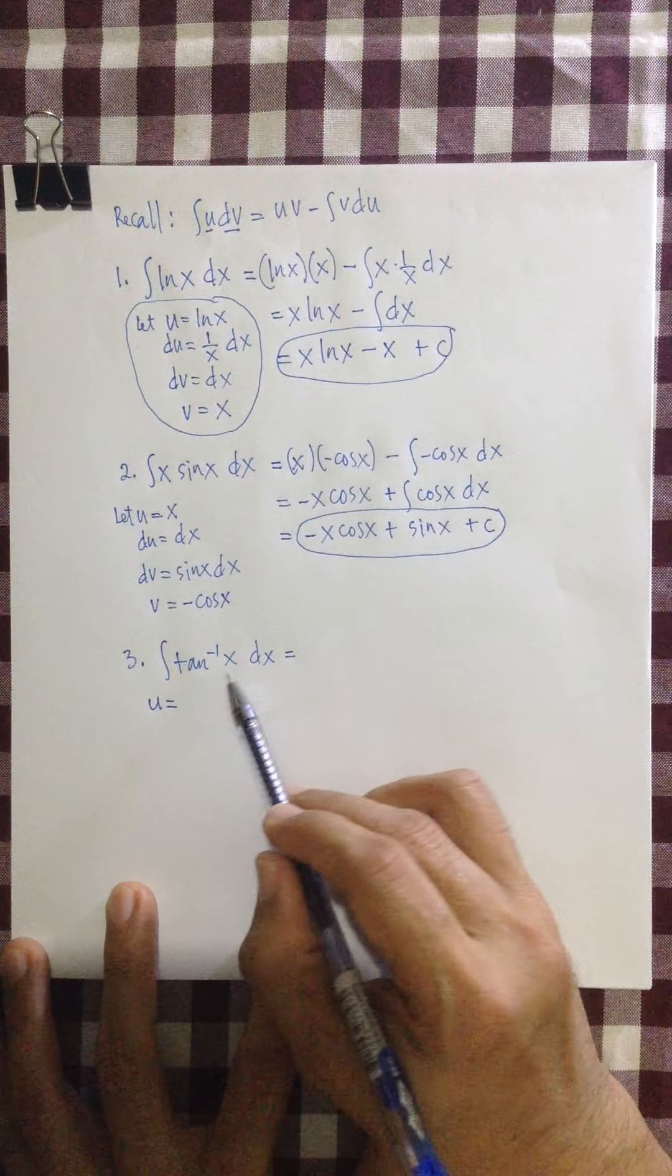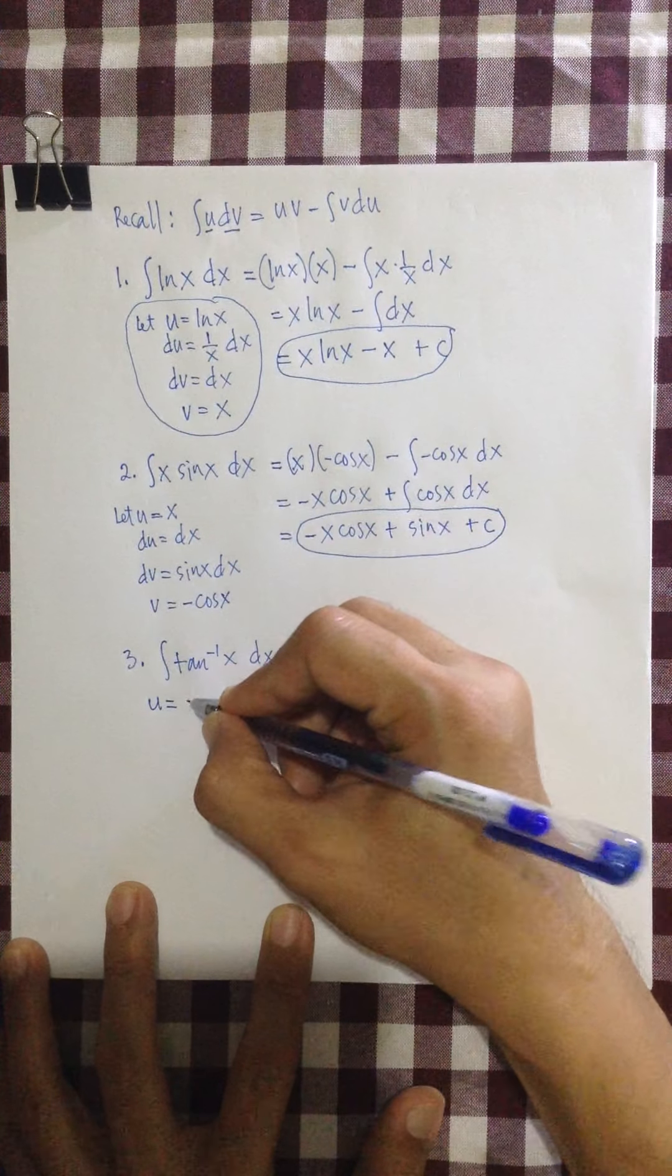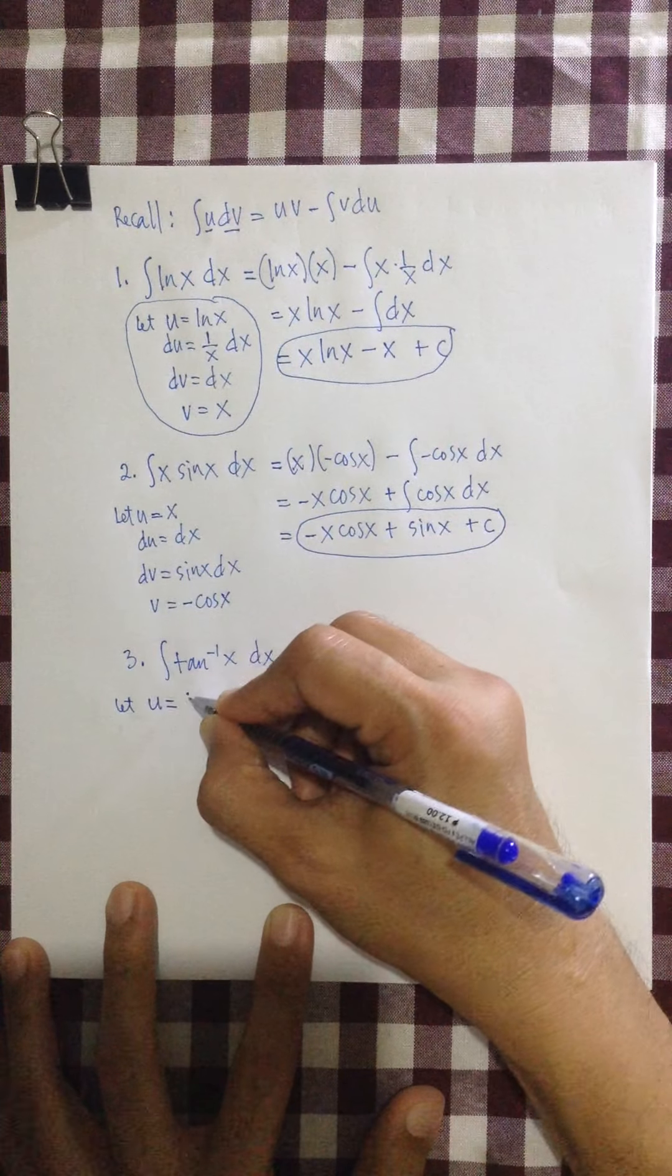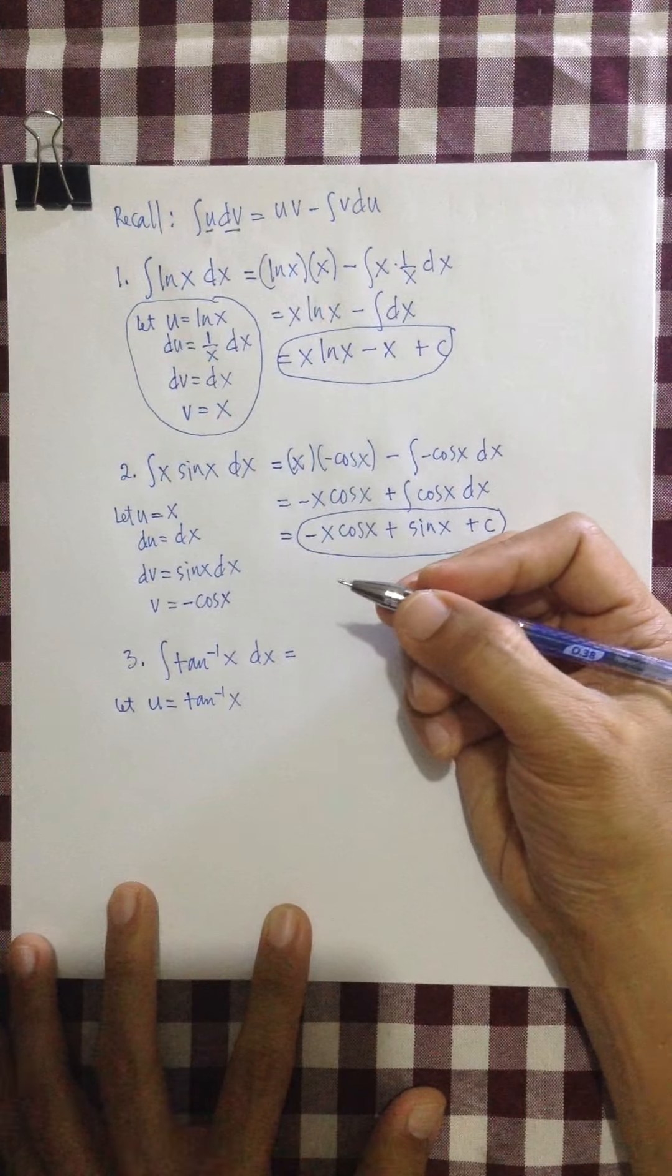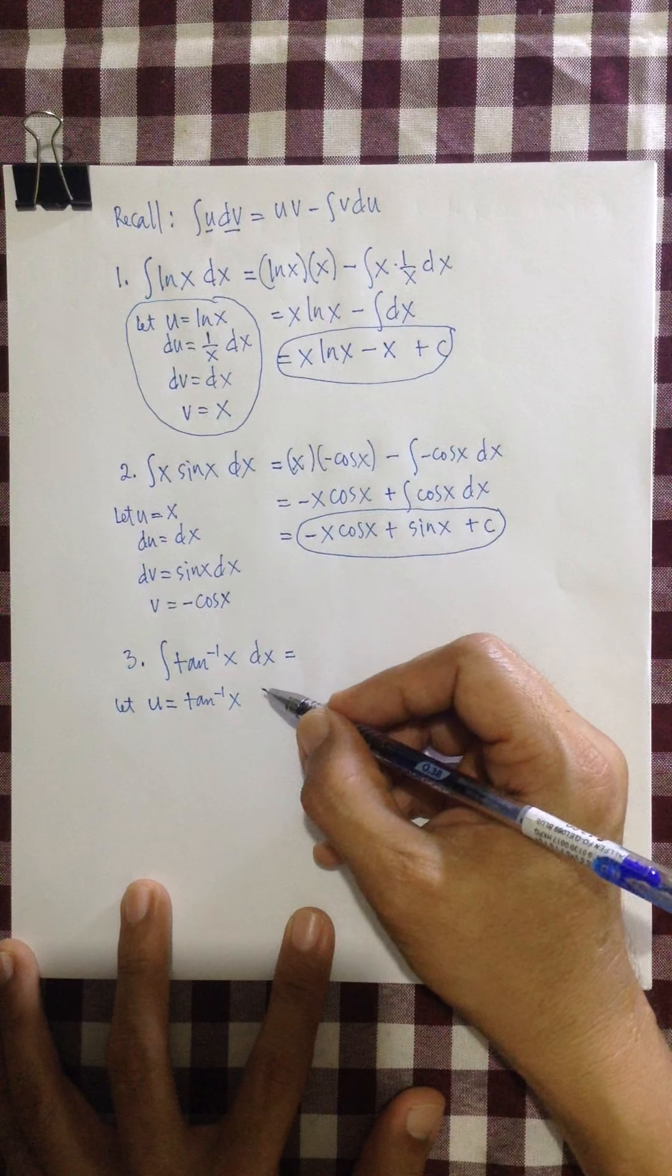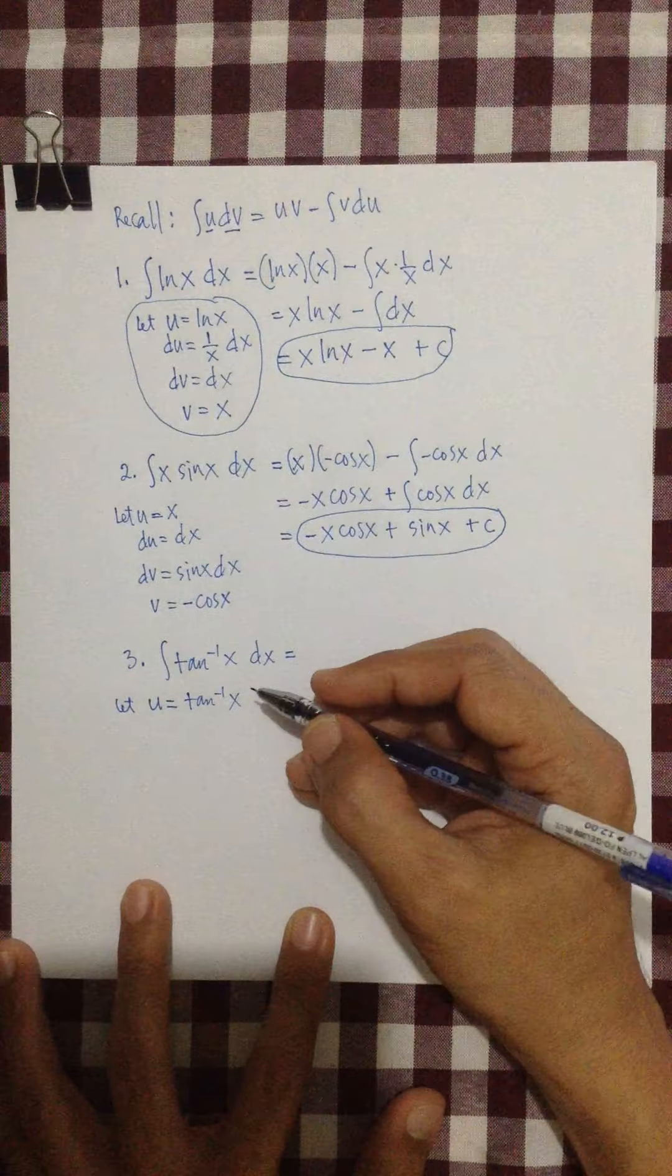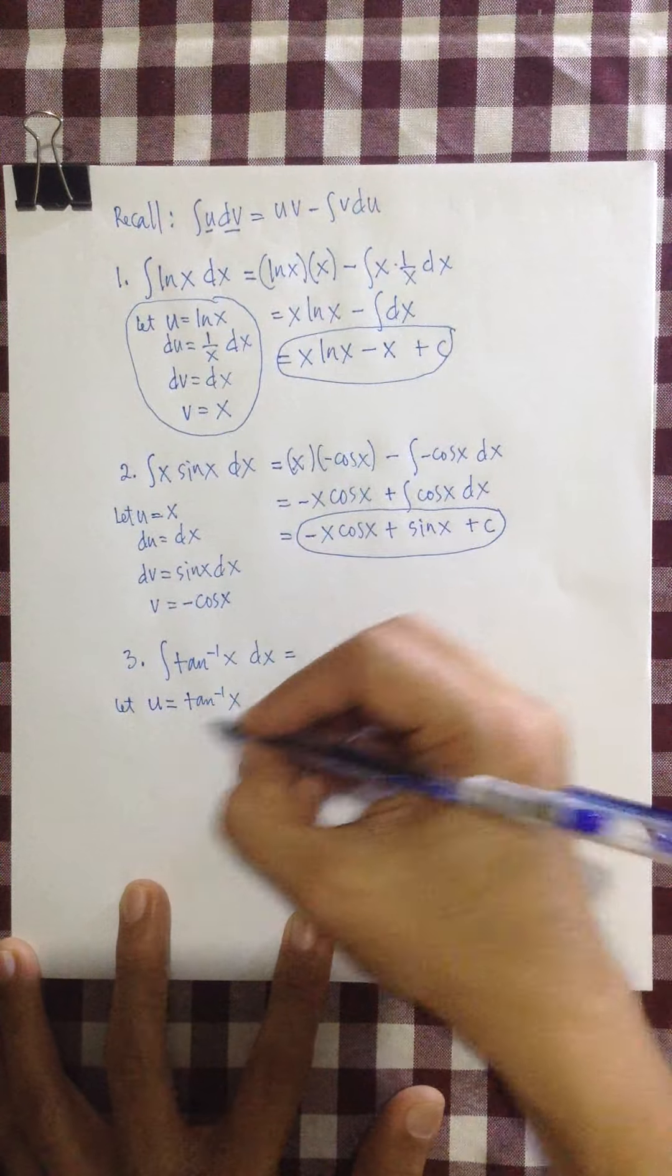Since we have no choice here, because this is a trigonometric function, so we're going to choose this for our u. Tangent inverse of x. Again, we choose this for our u, because we cannot choose dx for our u. And, in fact, the derivative of tangent inverse of x exists, right?